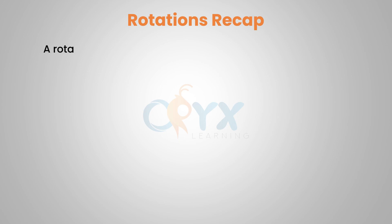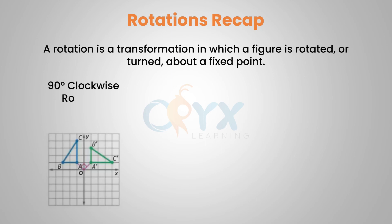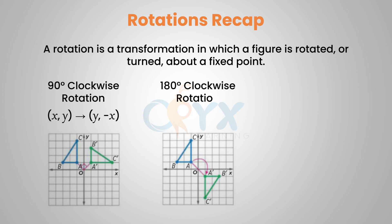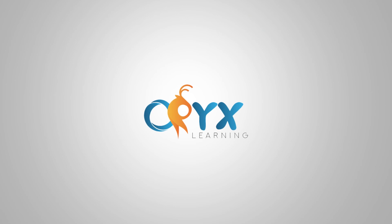Remember, a rotation is a transformation in which a figure is rotated or turned about a fixed point. For 90 degrees clockwise about the origin, (x,y) becomes (y,-x). For 180 degrees clockwise about the origin, (x,y) becomes (-x,-y). And for a 270 degree clockwise rotation about the origin, (x,y) becomes (-y,x). That is our lesson for today. Thank you for joining us, and I hope you enjoyed it.